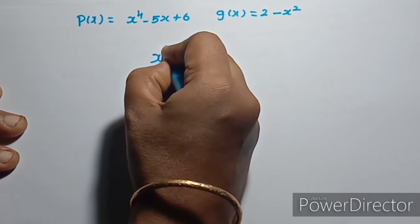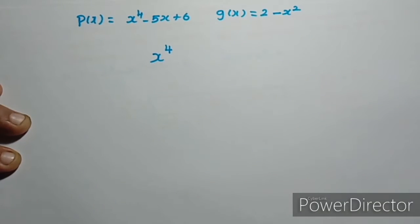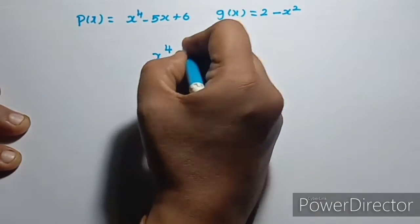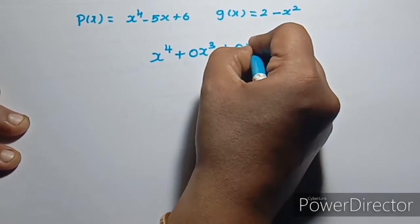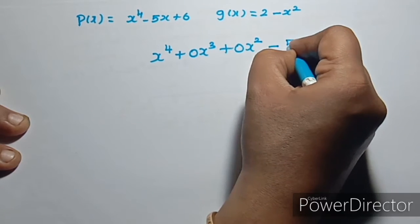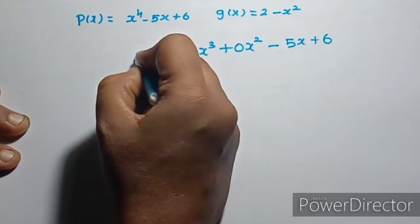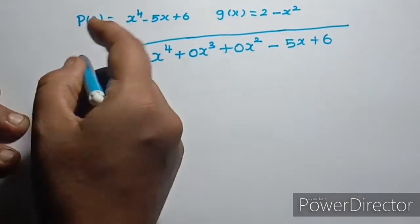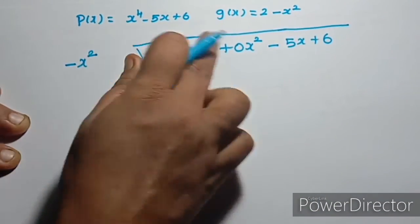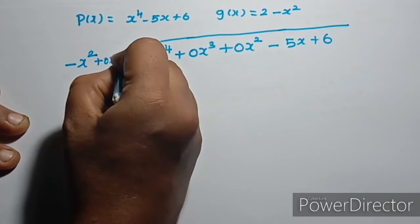We arrange the dividend: x power 4, x power 3, x power 2, x power 1, minus 5x plus 6. The divisor g(x) is minus x square plus 0x plus 2.